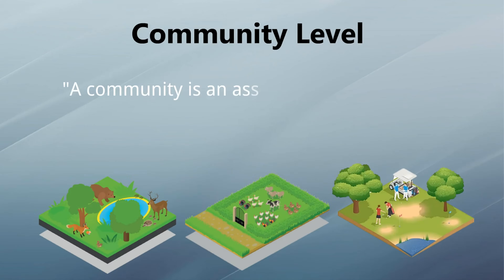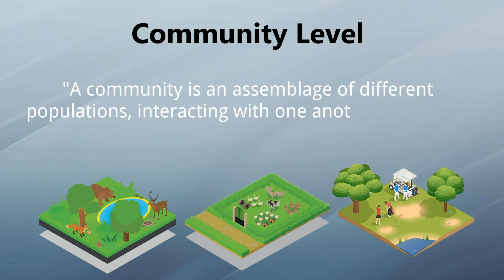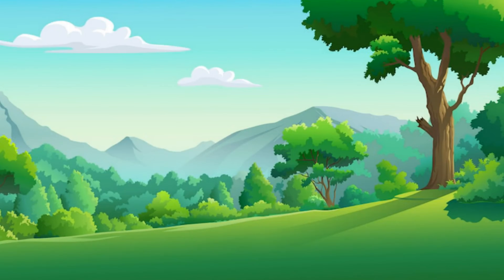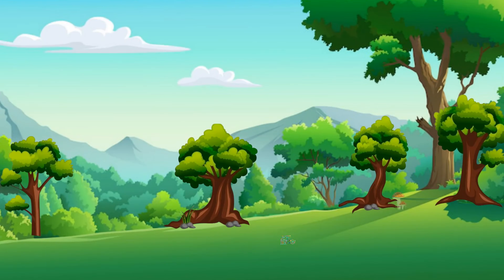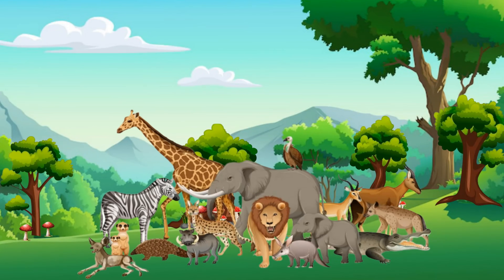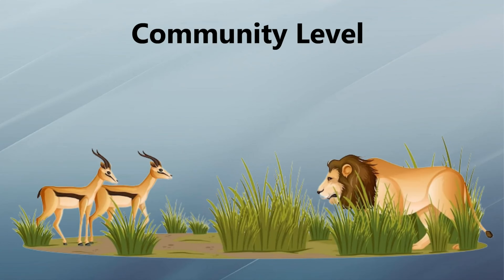At the community level, a community is an assemblage of different populations interacting with one another within the same environment. A forest may be considered as a community — it includes different plant, microorganism, fungi, and animal species. Communities are collections of organisms in which one population may increase and others may decrease.